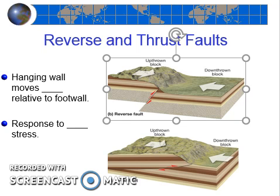Hopefully you said convergent plate boundaries — and indeed, we can find reverse and thrust faults near all three types of convergent plate boundaries: ocean-continent convergent, ocean-ocean convergent, and continent-continent convergent.